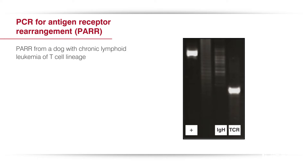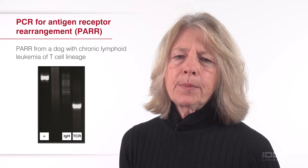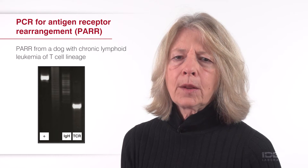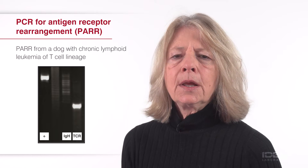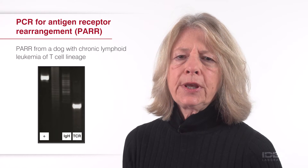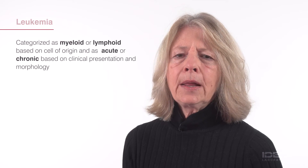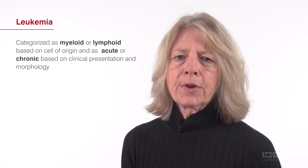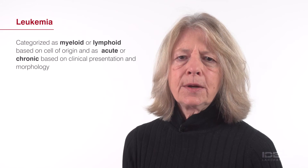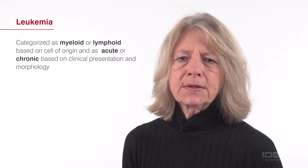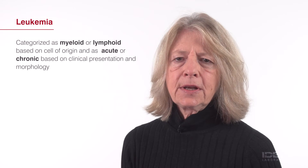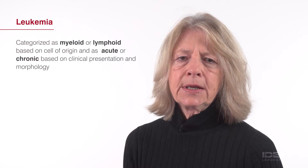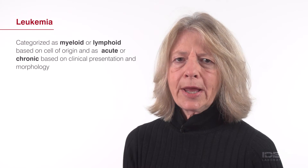Classification of hematologic malignancies in people incorporates genetic data, but this type of information is not yet widely available in veterinary medicine. There are two broad categories of leukemia based on cell lineage: myeloid and lymphoid. Myeloid leukemias include neoplastic proliferation of erythrocytes, granulocytes, monocytes, and megakaryocytes. Lymphoid leukemias can involve B or T lymphocytes, natural killer cells, or plasma cells.